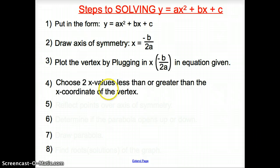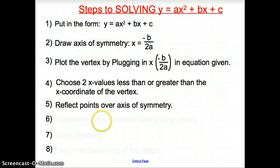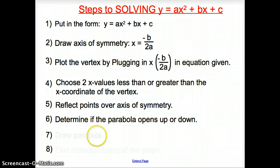Then you plug in your axis symmetry into your equation, choosing two values bigger than or less than your axis symmetry. Then reflect those points over the axis symmetry. Determine if it opens up or down. Draw the parabola. And then find the roots of the graph.